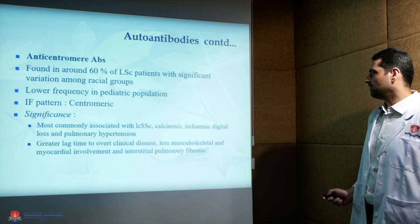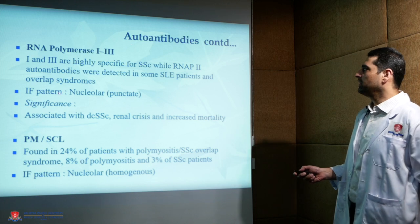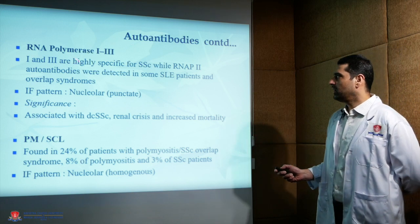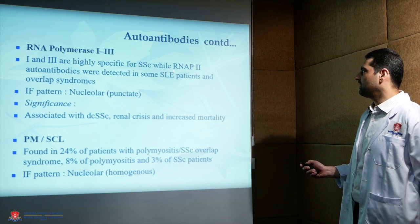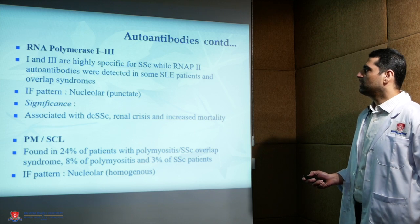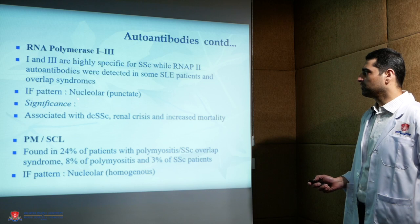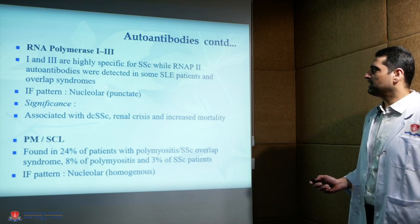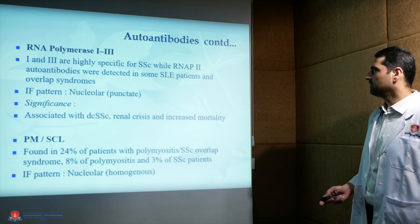RNA polymerase 1 and 3 are highly specific for systemic sclerosis, while RNA polymerase 2 autoantibodies are detected in some SLE patients and overlap syndromes. The immunofluorescence pattern is nucleolar, and this is associated with diffuse cutaneous variant, renal crisis, and increased mortality.